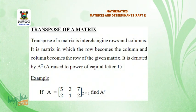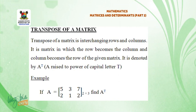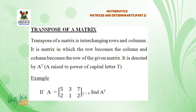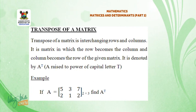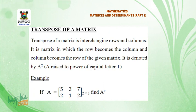Transpose of a matrix. The transpose of a matrix is interchanging rows and columns. It is a matrix in which the row becomes the column and the column becomes the row of the given matrix. It is denoted by A raised to the power of capital letter T.